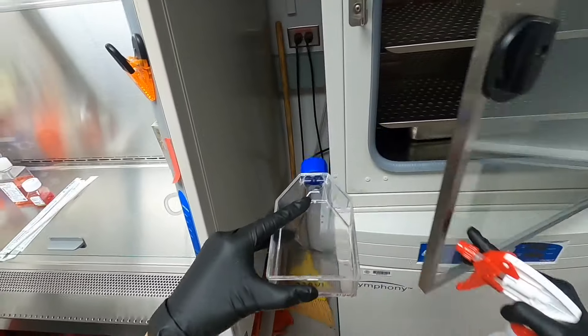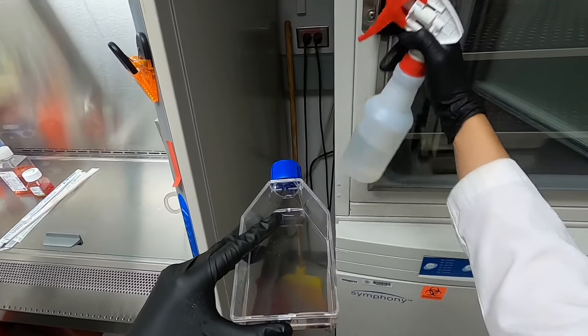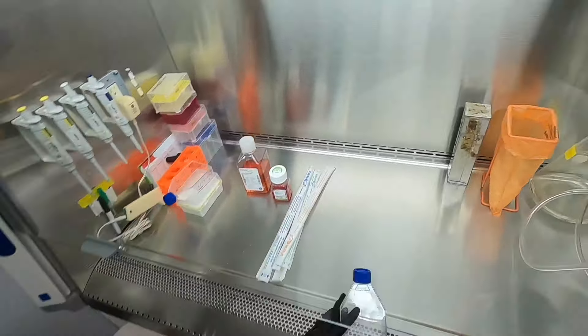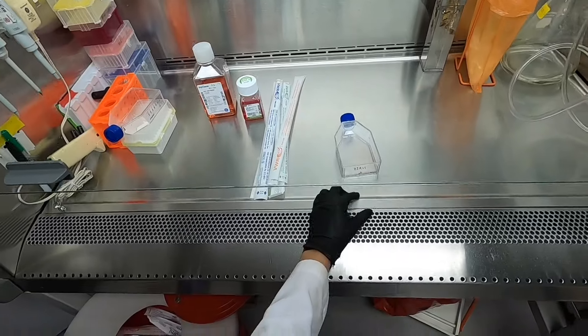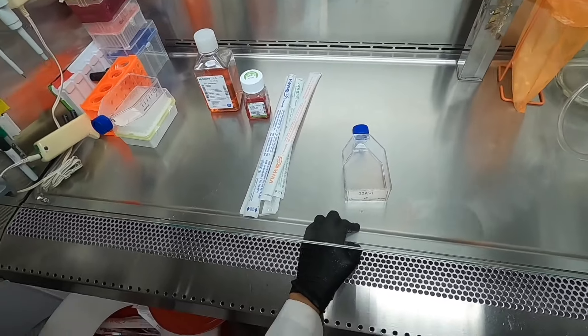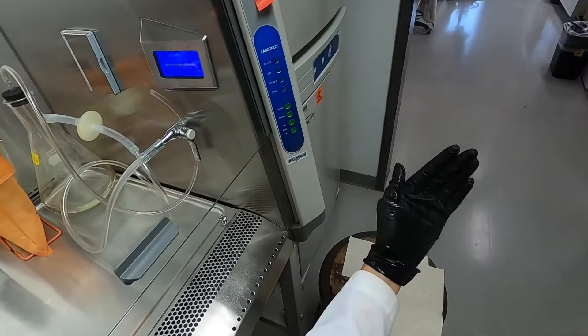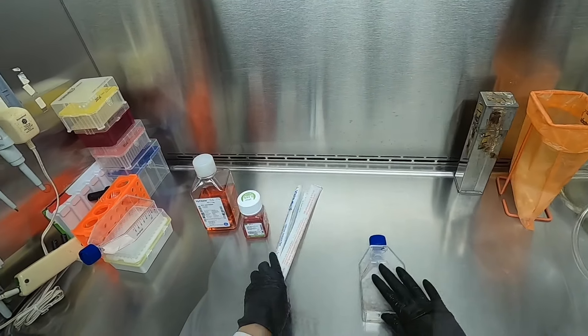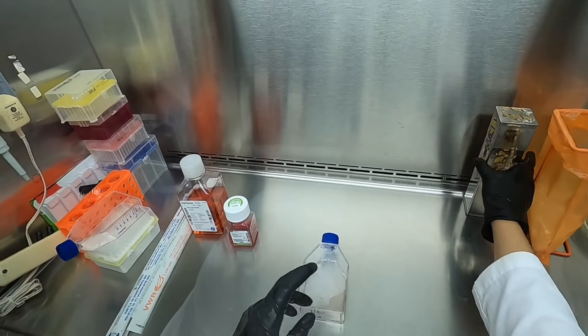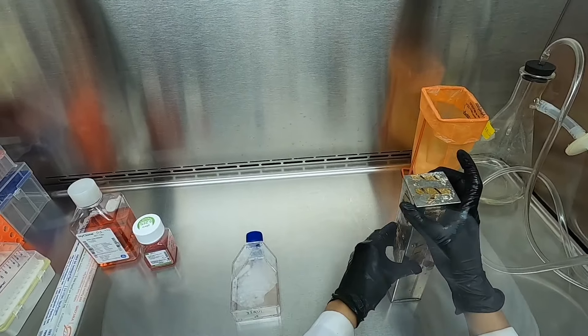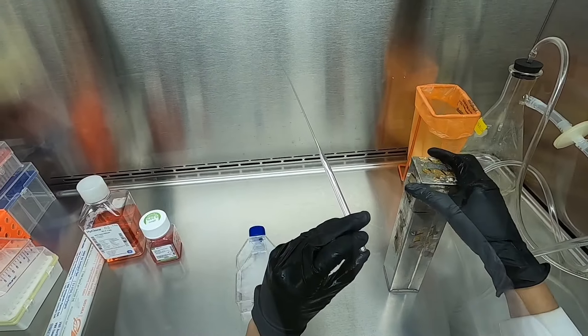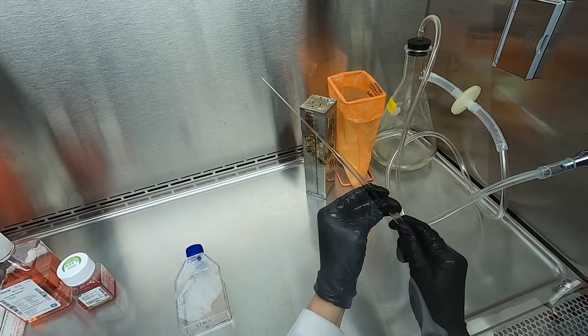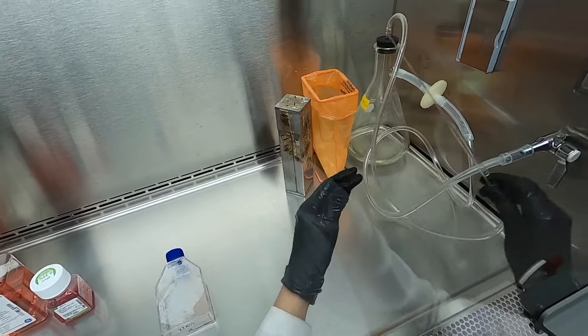We will now take our cell culture flask out of the incubator and into the laminar flow hood. Gloved hands should also be sprayed with 70% ethanol before entering the hood. Since we are working with liquid cell culture, we will be generating liquid waste. Therefore we have set up a vacuum flask inside of the hood containing bleach. This way we can aspirate any liquid waste for proper disposal.